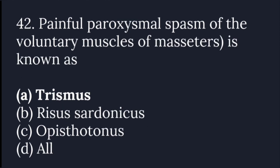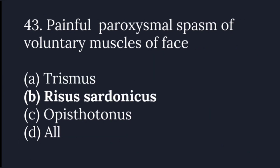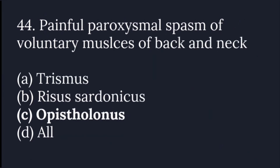Painful paroxysmal spasm of the voluntary muscles of the jaw is known as trismus. Painful paroxysmal spasm of the voluntary muscles of the back and neck is called opisthotonos — a position in which the back is curved and the body is C-shaped.